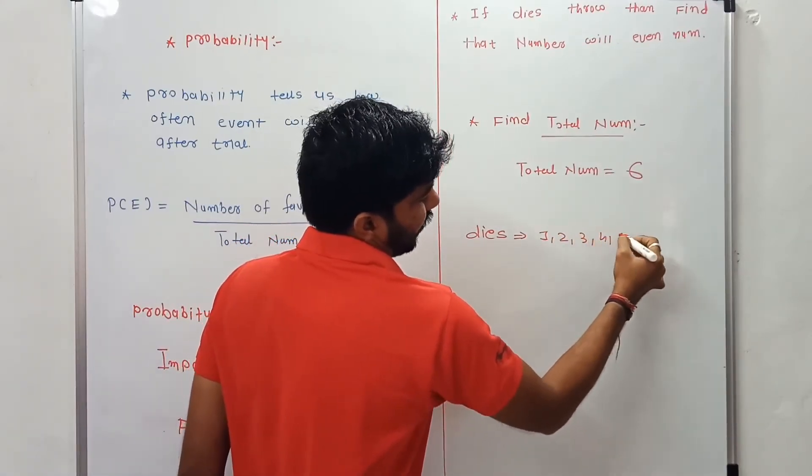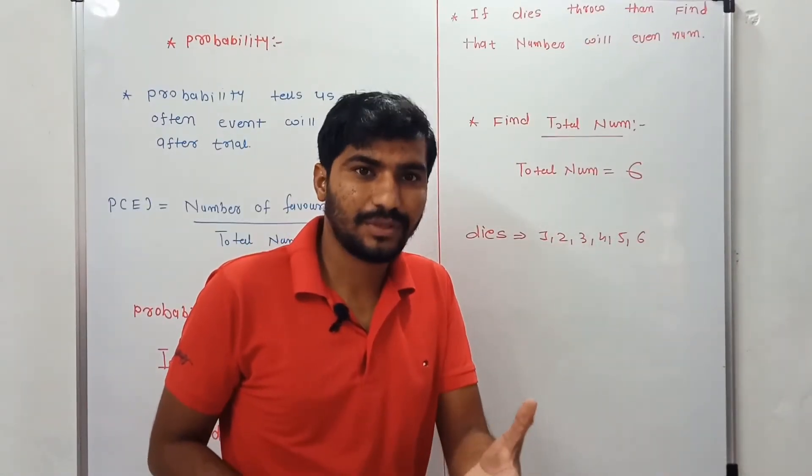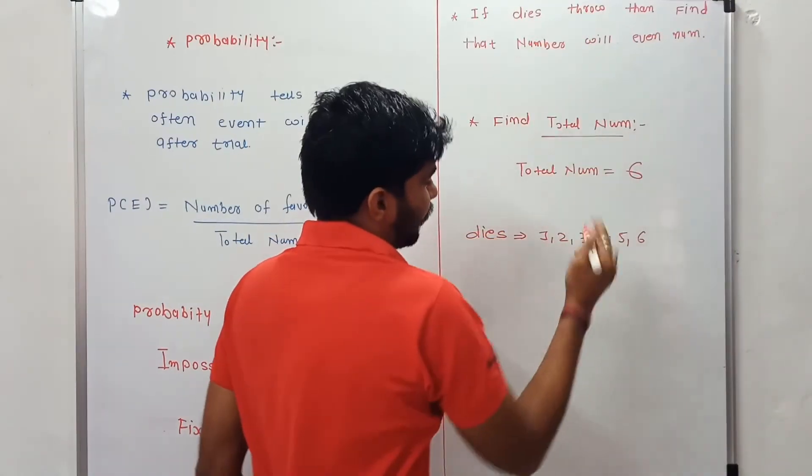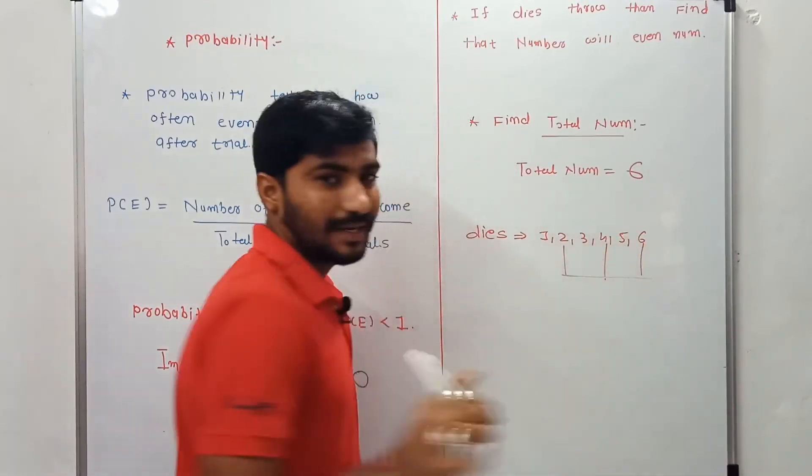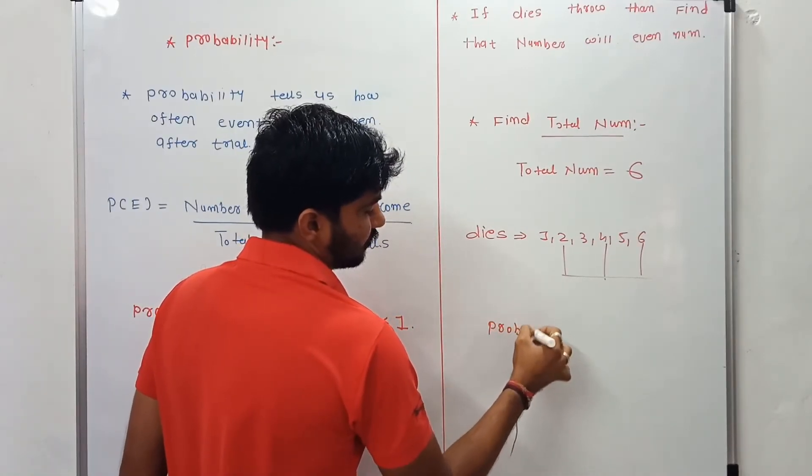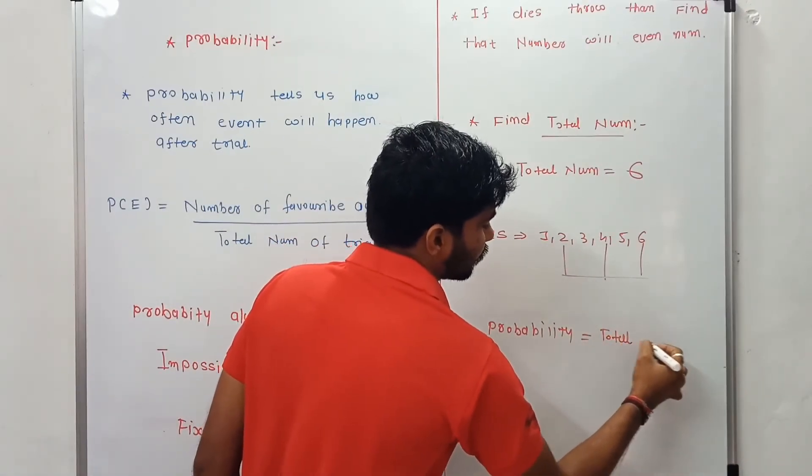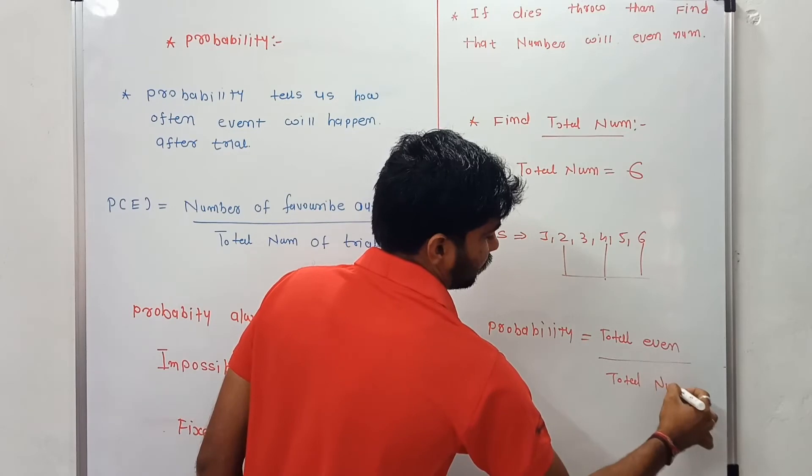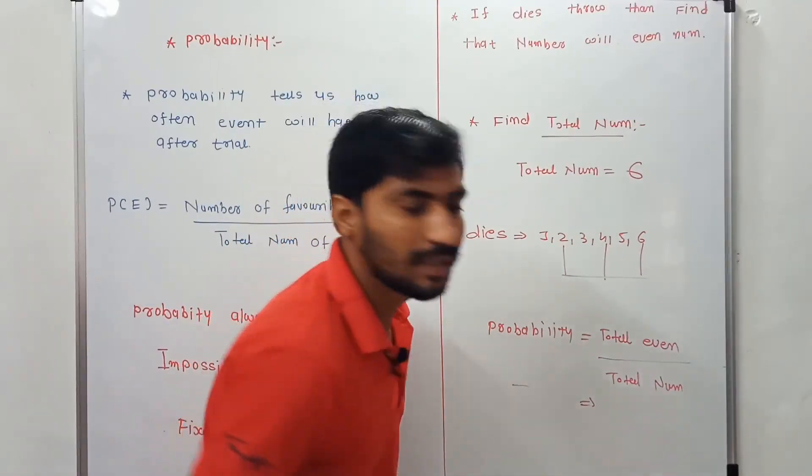So if dice thrown, then find the number will be even number. Friends, the total number possible is 1, 2, 3, 4, 5 and 6. Any dice will have only 1 to 6 numbers. Then find the even numbers. What will be even numbers in dice? 2, 4 and 6. That means there are just 3 even numbers in any dice.